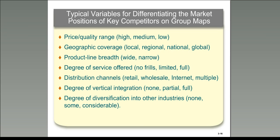One firm is in the northeast, another is in the south — they may not compete with each other at all because of geographic distinctions. You might look at product line breadth: are they one particular product or do they have a broad product base? Degrees of service offered — like a standard no-frills hamburger versus a place where you can get a plate with various vegetables and toppings. You might look at vertical integration — whether they own their suppliers and distribution channels — or how diversified the firms are, since diversified firms will act differently than firms solely positioned in one marketplace.